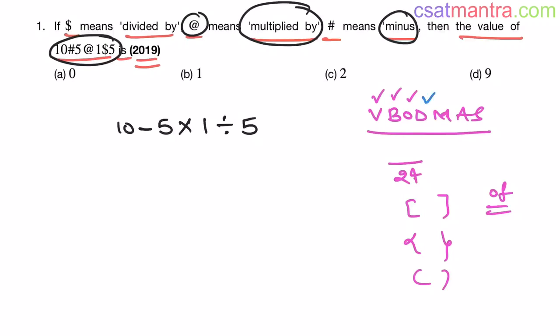D for division. Yes. We have it. So first we will be doing division my friends. We will be proceeding in this order. So 10 minus 5 into 1 by 5. So we did the division. Division of these two numbers my friends.